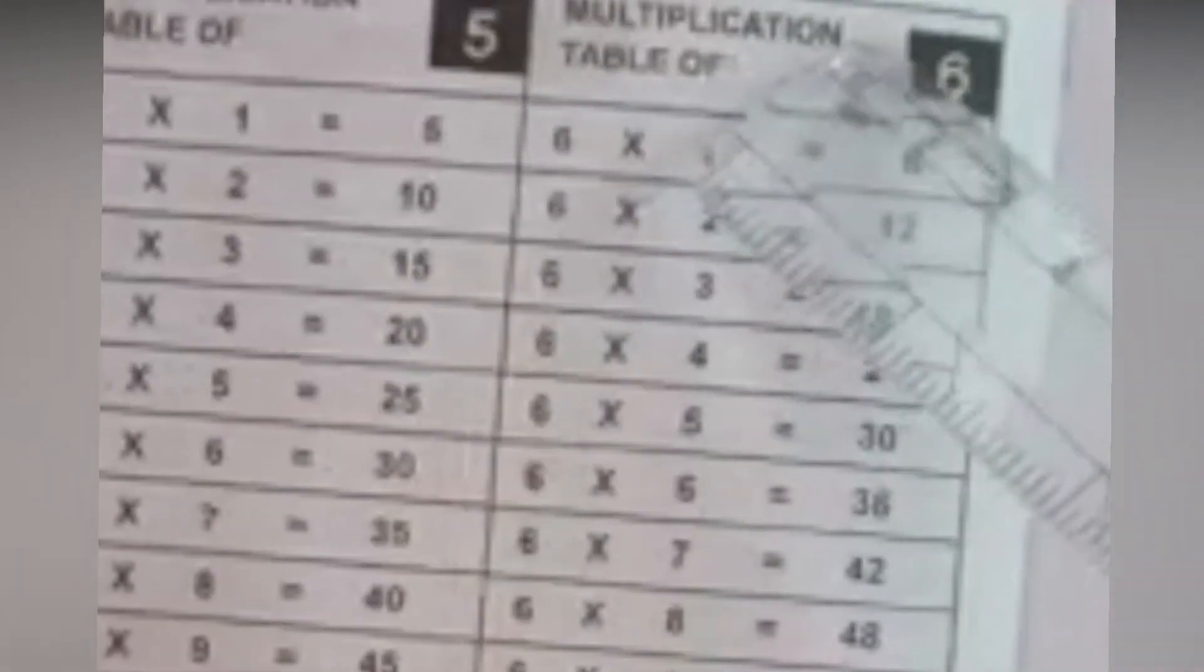Let us learn multiplication table of 6: 6 ones are 6, 6 twos are 12, 6 threes are 18, 6 fours are 24, 6 fives are 30, 6 sixes are 36, 6 sevens are 42, 6 eights are 48, 6 nines are 54, 6 tens are 60.